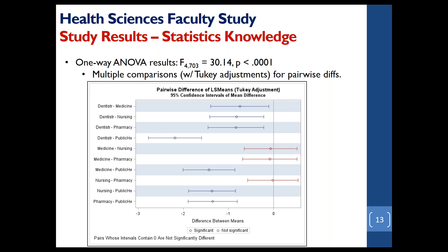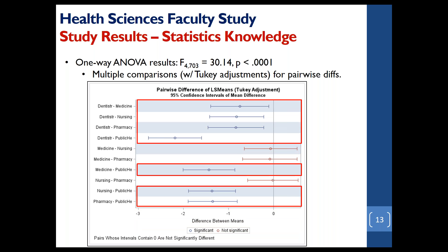To see if the differences in number of correctly answered items across disciplines were significant, we ran a one-way ANOVA and the result came out statistically significant. To follow up, we did multiple comparisons with Tukey's adjustments for pairwise differences. As expected, public health clearly and significantly performed better than all the other four health sciences disciplines, and dentistry performed significantly poorer than the other four. Now I'll turn the floor over to Mike to go into more specifics on our results.